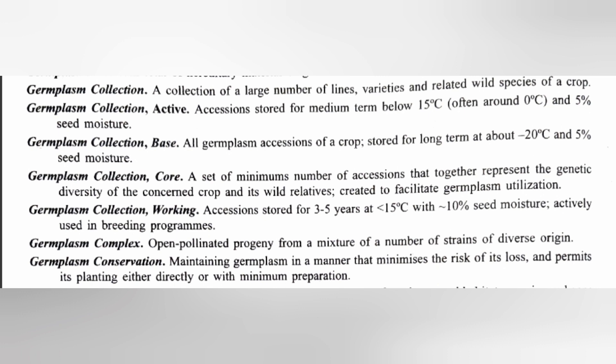Germ plasm complex: open pollinated progeny from a mixture of a number of strains of diverse origin. When progeny comes from a mixture of diverse-origin strains, it is called a complex.